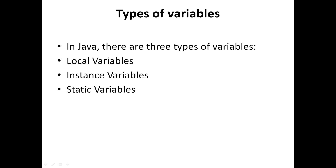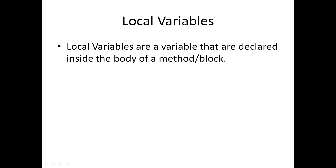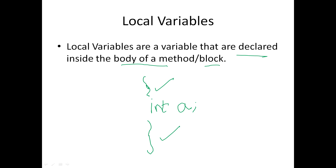The next step is the type of variables. There are three types: local variables, instance variables, and static variables. Local variables are those declared inside a method or inside the body of a particular block. Their scope belongs only to that particular block or method. We can't access them from other methods — those are called local variables.